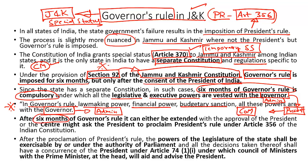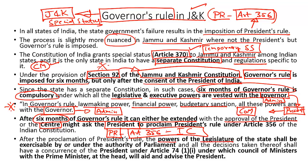After the expiry of six months of Governor's Rule, it can either be extended with the approval of the President, or the central government can request the President to proclaim President's rule under Article 356 of the Indian Constitution. If President's rule is imposed after the expiry of six months of Governor's Rule, the powers of legislation and administration transfer to the central government and Parliament. Legislative and budgetary powers are exercised by Parliament, while executive and administrative powers are exercised by the President guided by the Union Council of Ministers.